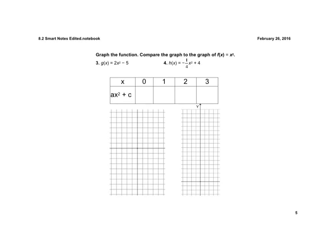Now we have one where we have the a and the c involved. So again, I plug 0 in for x. 0 squared is 0, 0 times 2 is 0, and 0 minus 5 is negative 5.